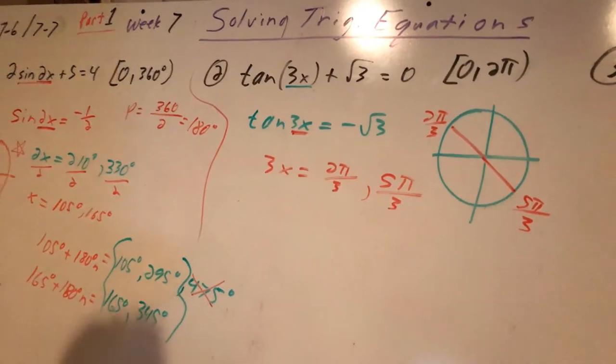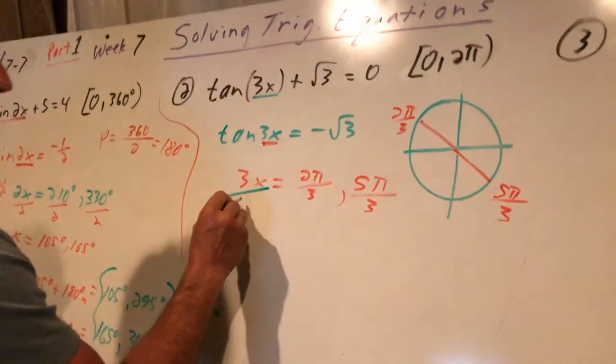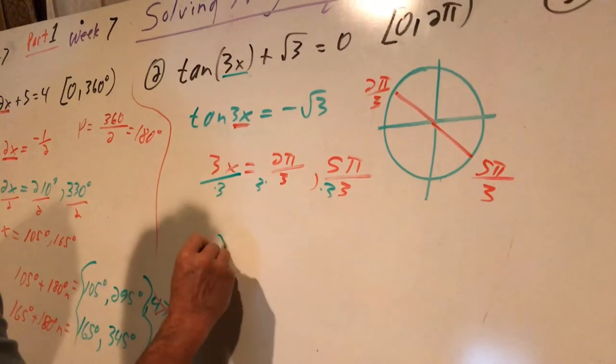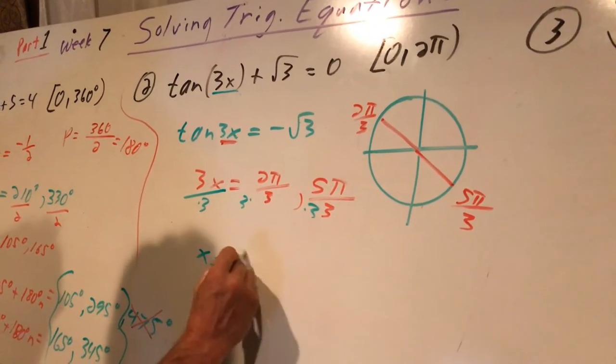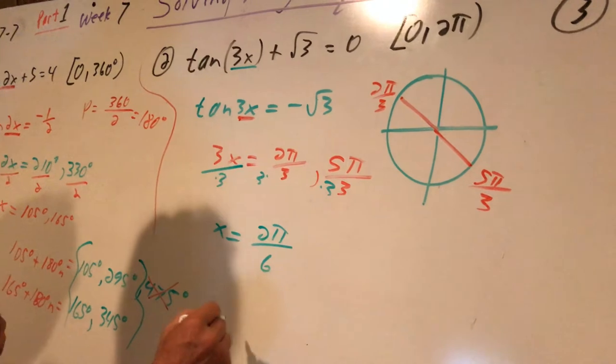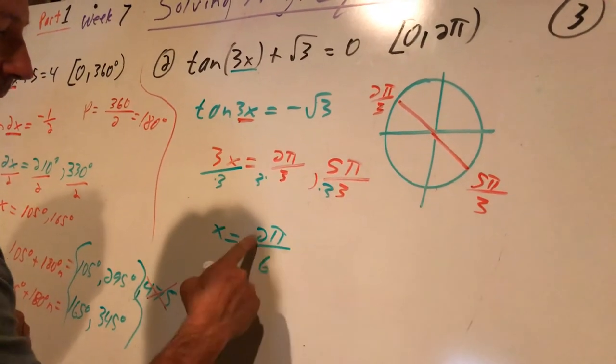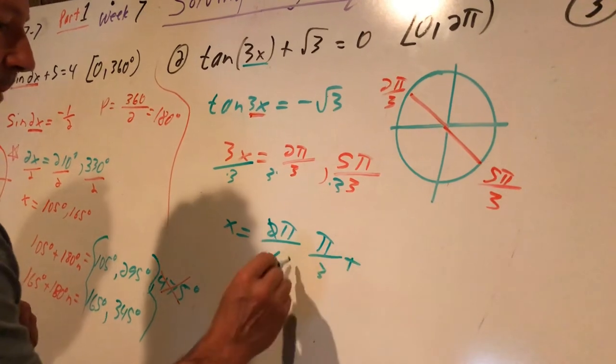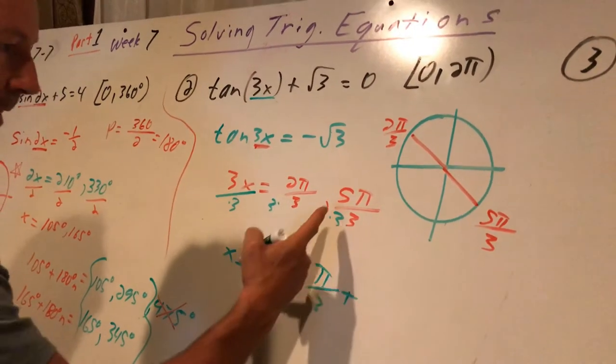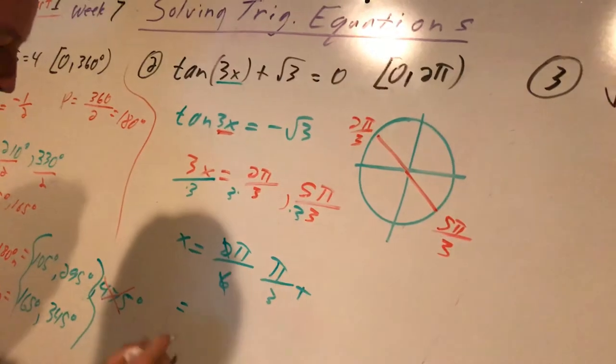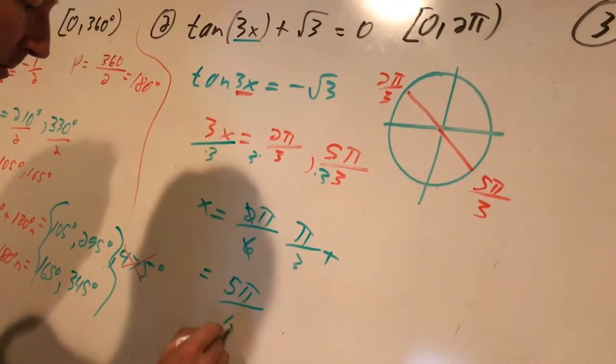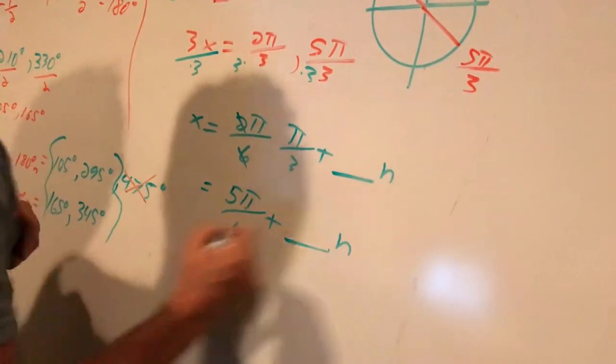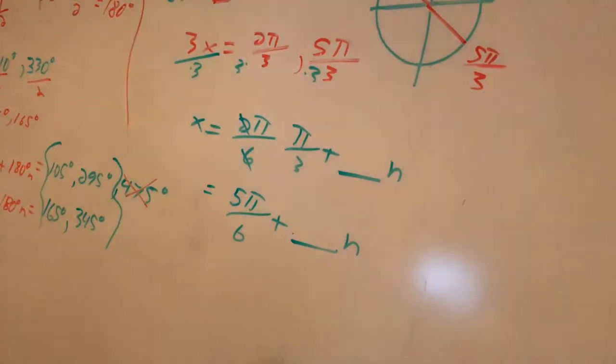So in this case, 3x equals 2π over 3, or 5π over 3. I have to divide by 3. On all these, it's the same as multiplying the bottom by 3. So my answers are 2π over 6. I'll reduce that. That's really just π over 3. And I'm going to add the period. And the other one is going to be 5π over 6. And I have to add the period n times as many as I can.